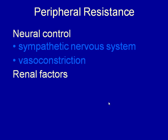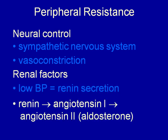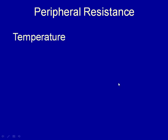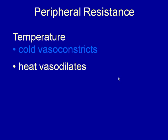Renal factors also regulate blood pressure. If blood pressure drops, endocrine cells in the kidney secrete renin, which converts angiotensinogen to angiotensin-1 and then angiotensin-2. Angiotensin-2 causes vasoconstriction and triggers the release of aldosterone. Aldosterone causes sodium retention; water follows sodium, increasing blood volume and thereby blood pressure. Temperature also affects peripheral resistance: when cold, blood vessels vasoconstrict to conserve heat; when hot, they vasodilate to dissipate heat.